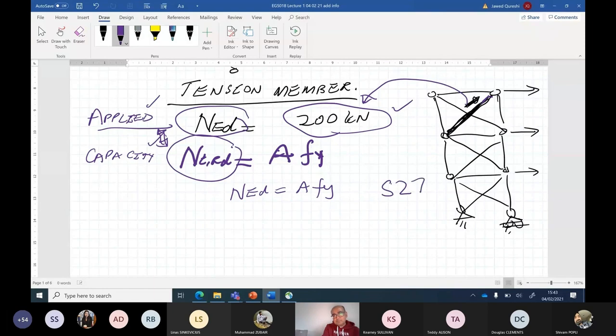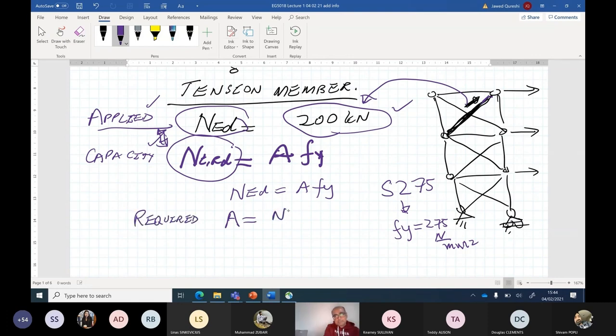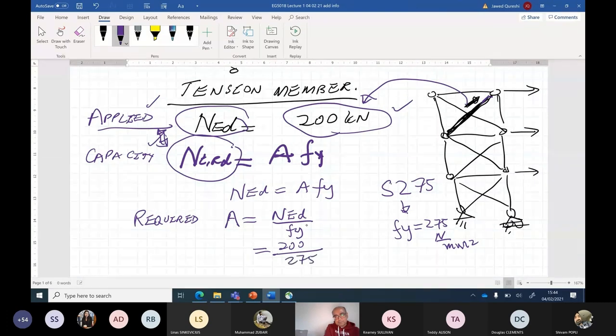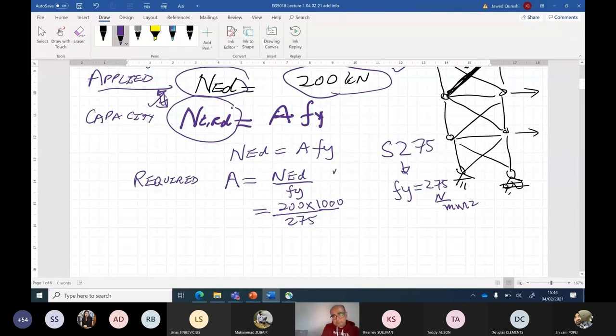If I assume that, then I will have NED equal to AFy. I'm using S275 steel, for which Fy is 275 newtons per millimeter square. NED by rearranging, I will have required area equal to NED over Fy. NED is 200 divided by 275. I'm converting this NED, which is kilonewtons, into newtons so that I have consistent units for area.